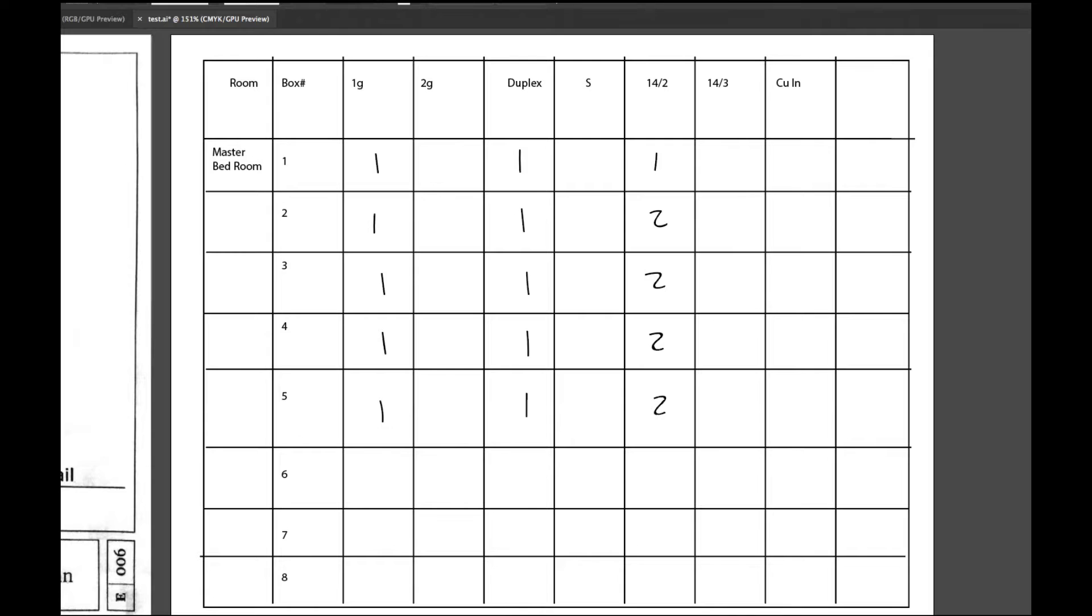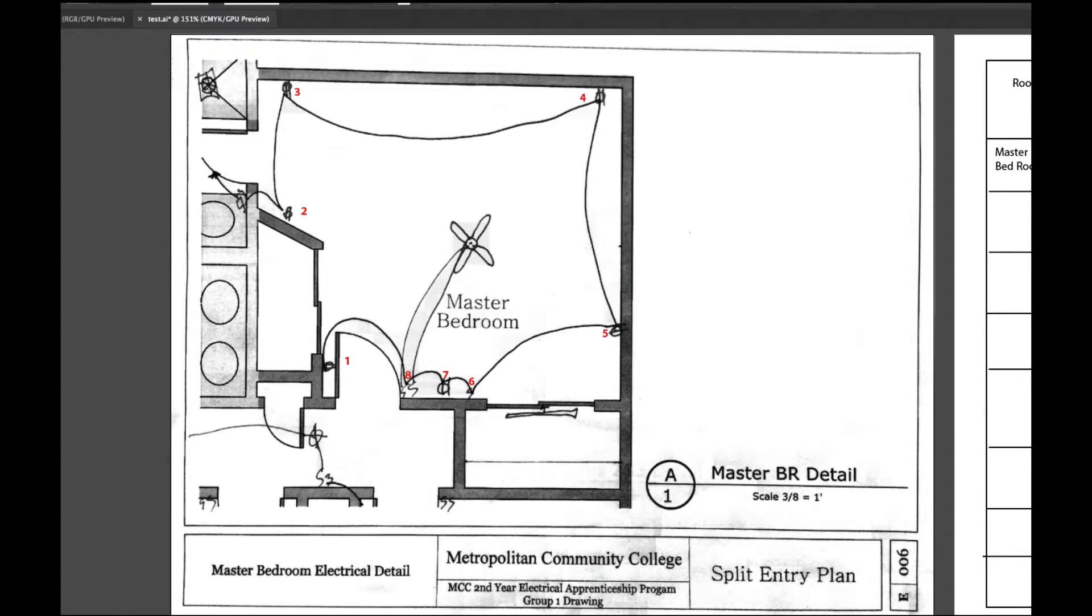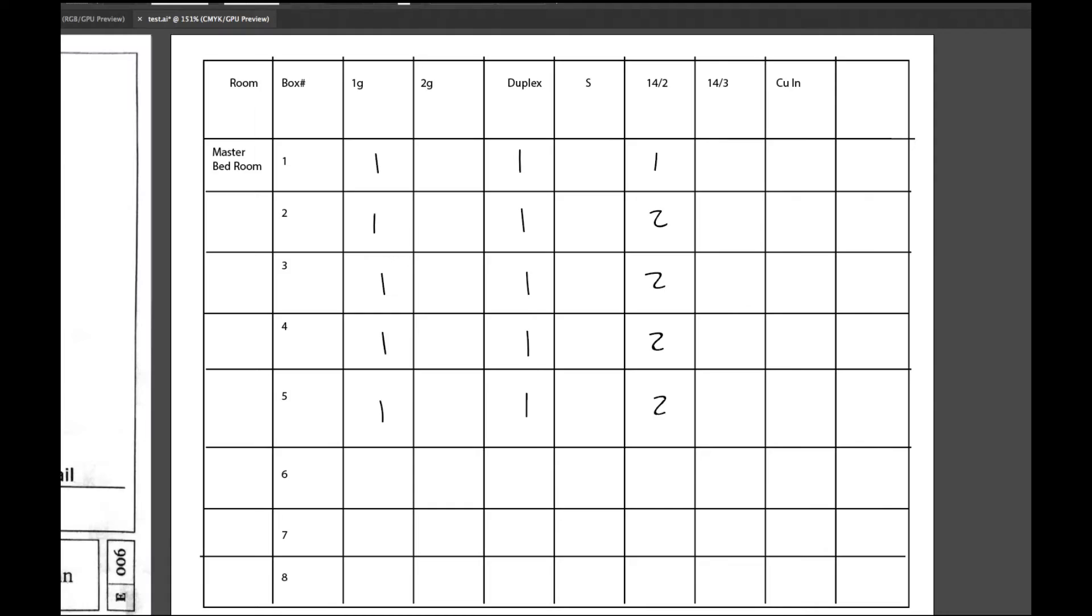Then I go over to six, which is really the same except for it's a switch. And when I do look at it, I'm missing a switch leg, so there would be a switch leg that comes out of here. So it would have three. So let's go over here and say box number six would be a single gang. It would have a switch, and it would have three 14.2s.